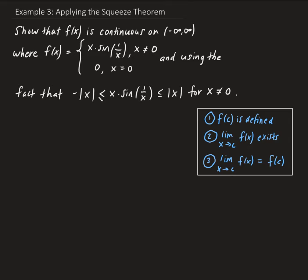To do this, remember that in order to show continuity at a point, we need to show that f of whatever point we're looking at is defined, the limit of the function as x approaches that point exists, and that the limit equals the function evaluated at that point.